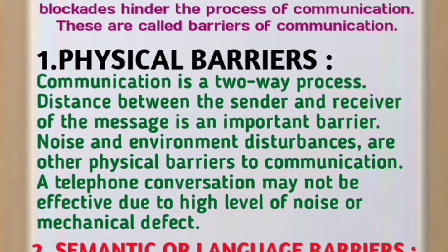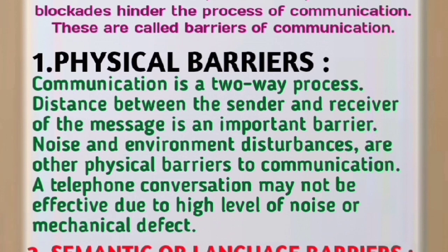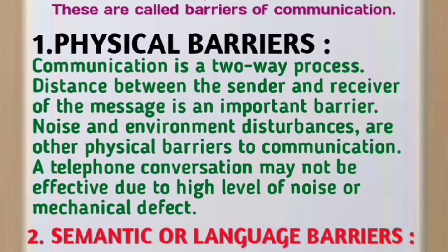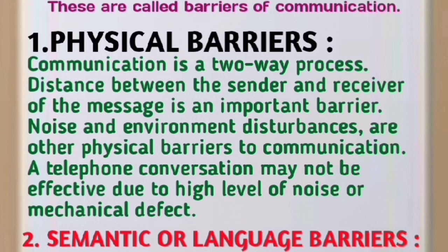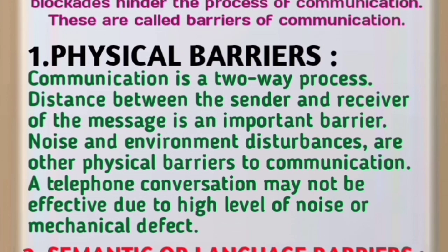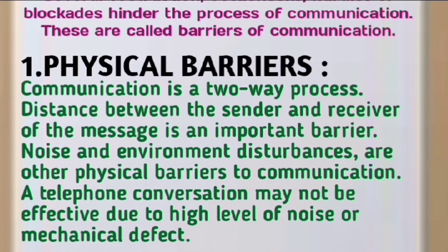Number one is Physical Barrier. Communication is a two-way process. Distance between the sender and receiver of the message is an important barrier. Noise and environmental disturbances are also physical barriers to communication. For example, a telephone conversation may not be effective due to a high level of noise or a mechanical defect.